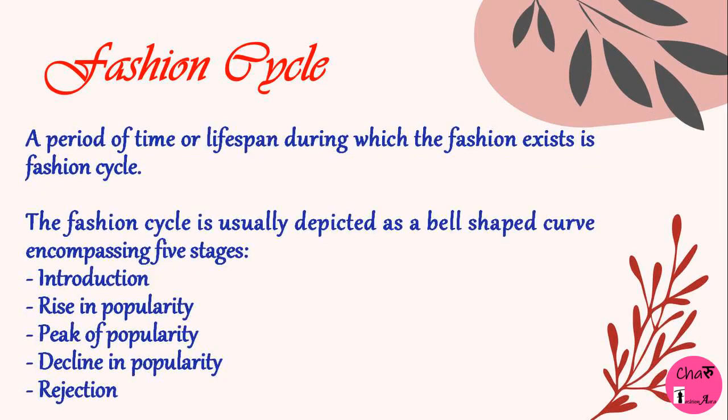A period of time or life span during which a fashion exists is called the fashion cycle. The fashion cycle is usually depicted as a bell-shaped curve, composing five stages: introduction, rise in popularity, peak of popularity, decline in popularity, and rejection.